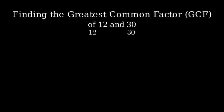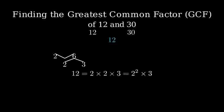Let's start with 12. 12 divided by 2 equals 6. 6 divided by 2 equals 3. And 3 divided by 3 equals 1. So, 12 equals 2 times 2 times 3, or 2 squared times 3.